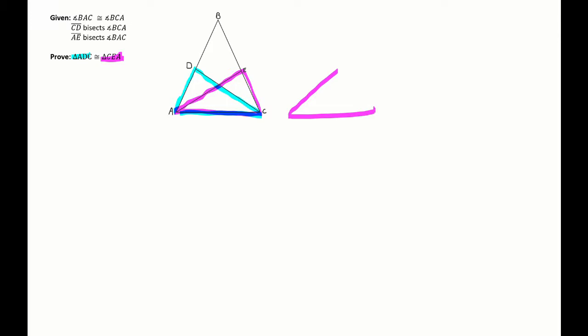They overlap each other. Looking at what we're given — that BAC is congruent to BCA — it's hard to see what angle that's talking about because it's covering up. So over here I'm going to draw those triangles again and think about the order of the vertices to keep my congruency statements straight.